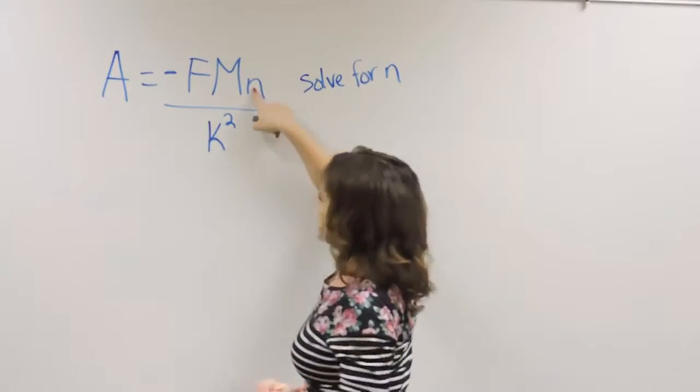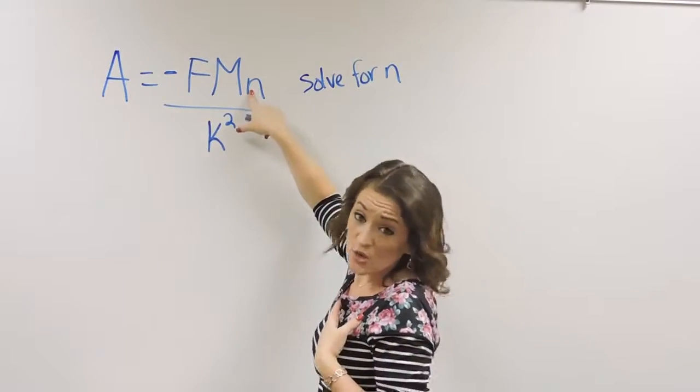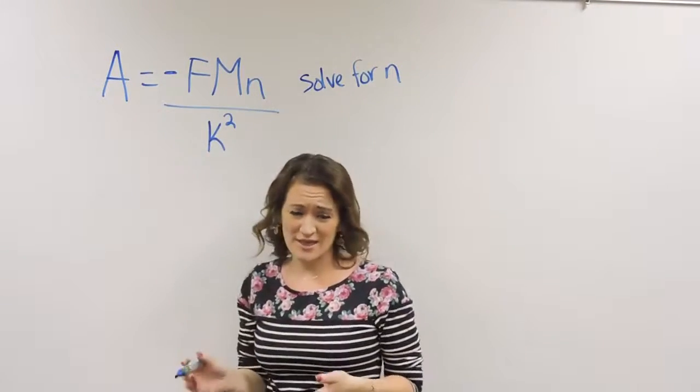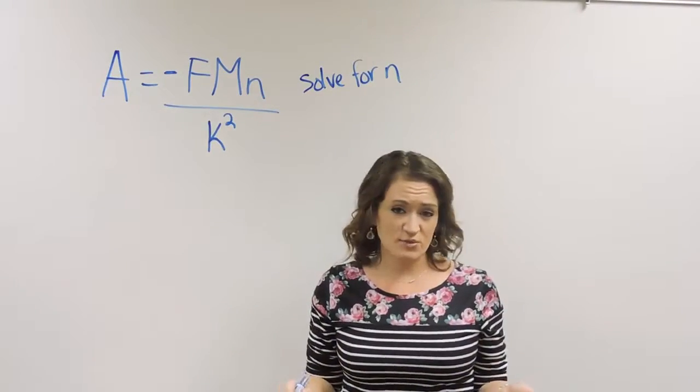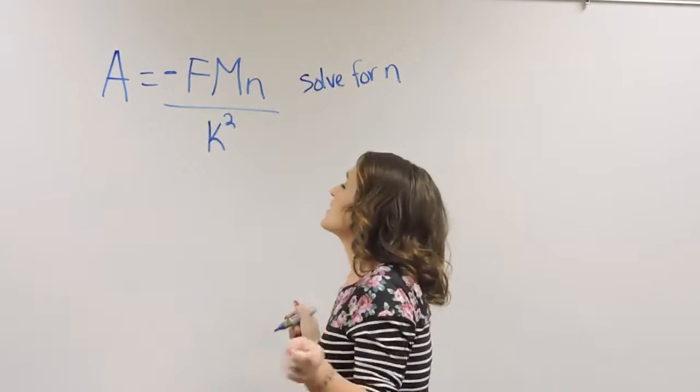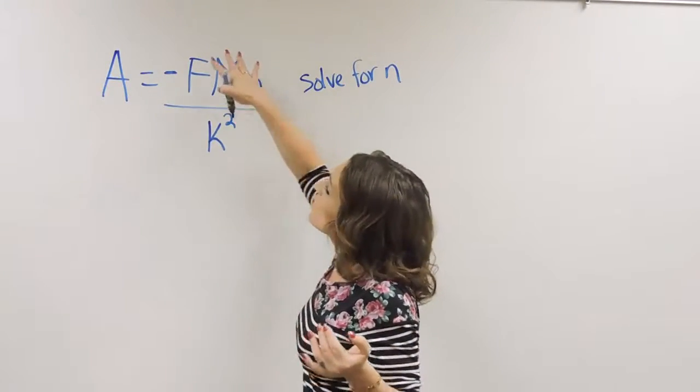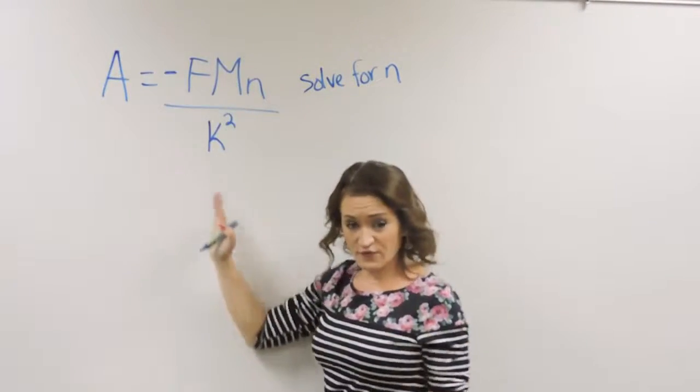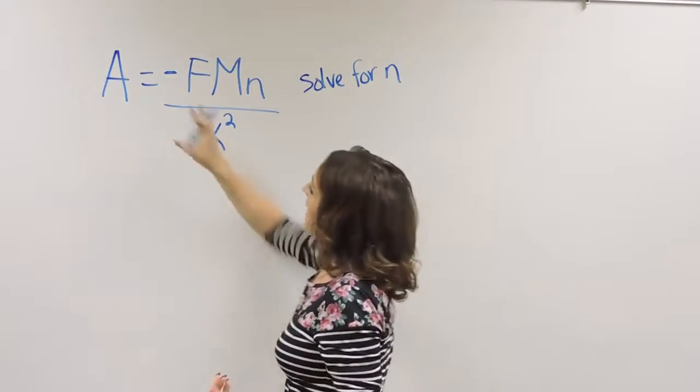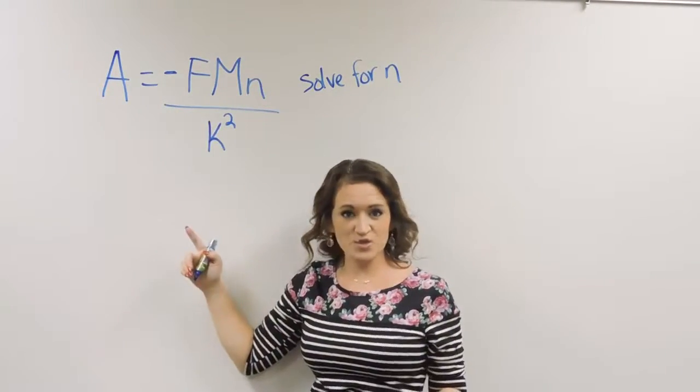If I'm trying to solve for n and I'm trying to get n all by itself, the first thing that I notice here, the most obvious to me, is the fact that I have a fraction here. And let's be honest, most of us don't like to deal with fractions. So let's get rid of this fraction. So getting rid of this fraction here is also going to help us by thinking, remember that even though this is a fraction, fractions also are a division. I have this numerator that's being divided by that k squared.